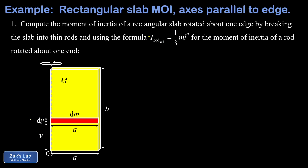When we pop a thin slice of the rectangular slab into the picture, we label its mass as dm because it's an infinitesimal mass. The side lengths of our rectangular slab are a for the width and b for the height, so the length of our thin slice is also a. The vertical position of this slice is a variable y going from zero at the bottom to b at the top, and the thickness of the slice is dy. A quick note: area density, usually given the Greek letter sigma, is the mass of an object divided by its area.